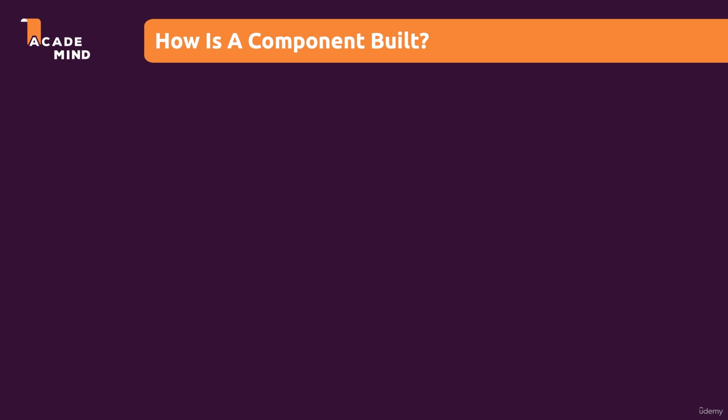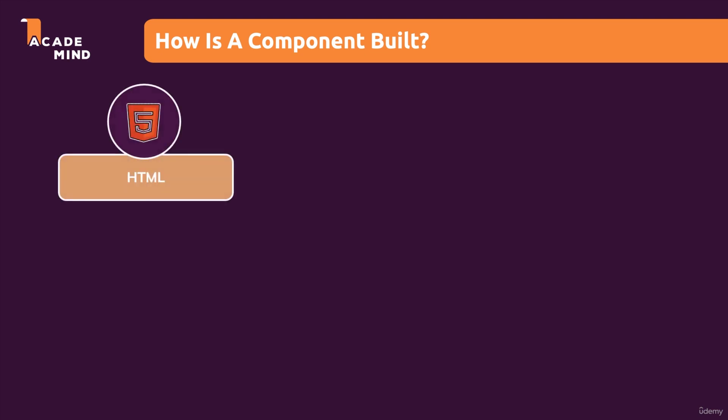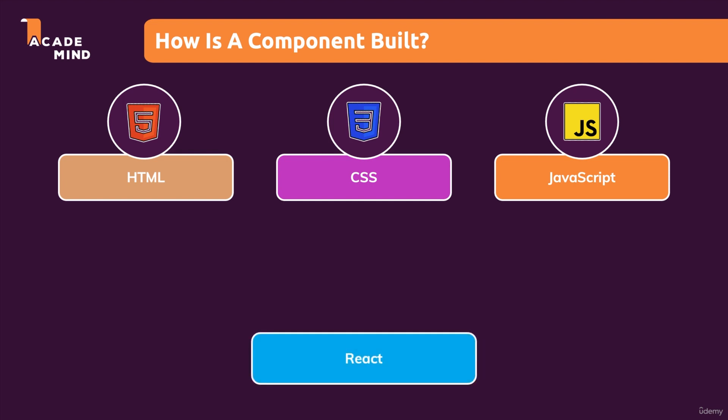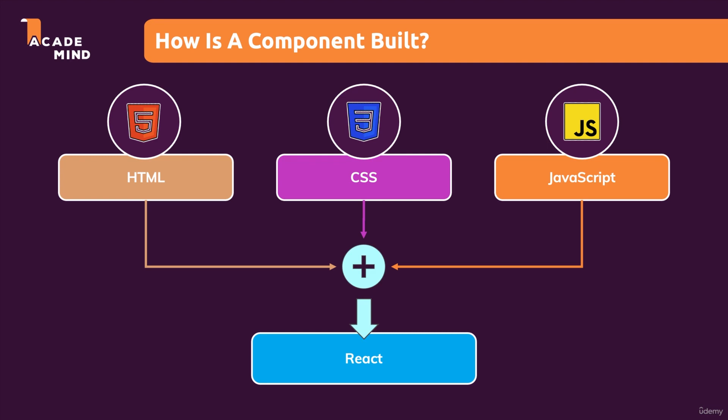We'll dive into the concrete code in just a second. In general, it's important to keep in mind that user interfaces are about HTML, CSS, and JavaScript. Therefore, all these components are about combining HTML, CSS, and JavaScript. When we work with React and build components, we do just that — we combine HTML, CSS, and JavaScript in all these components, and then combine all these components together to build the entire user interface.